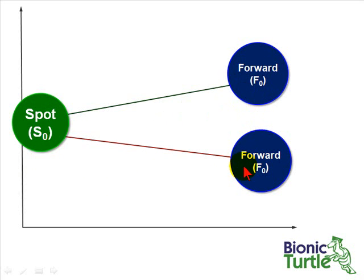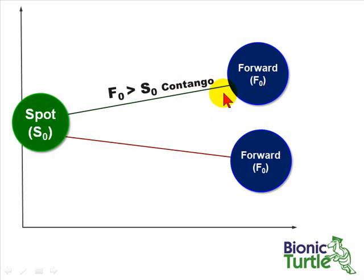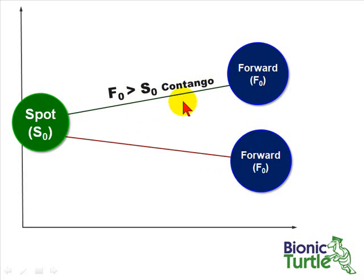I've got two forward prices here — one greater than the spot price and one less than the spot price. If the forward price is greater than the spot price, in other words if the forward curve is sloping upward, we call this contango. Another way to say this is if the distant forward price is greater than the near term forward price, that's contango.